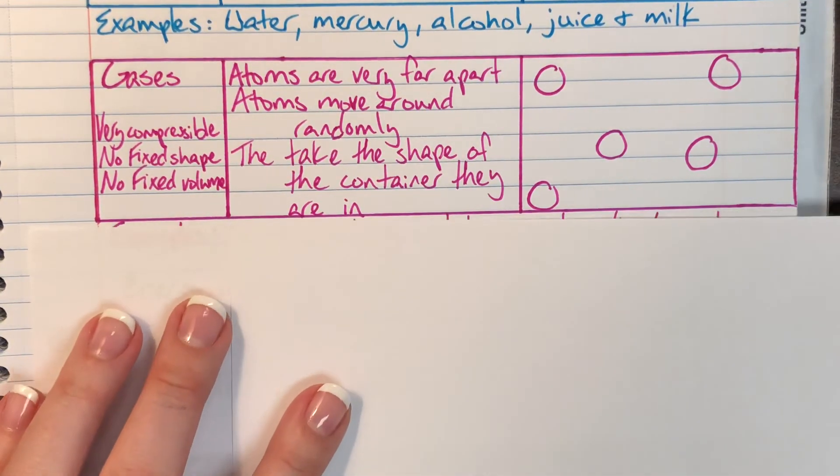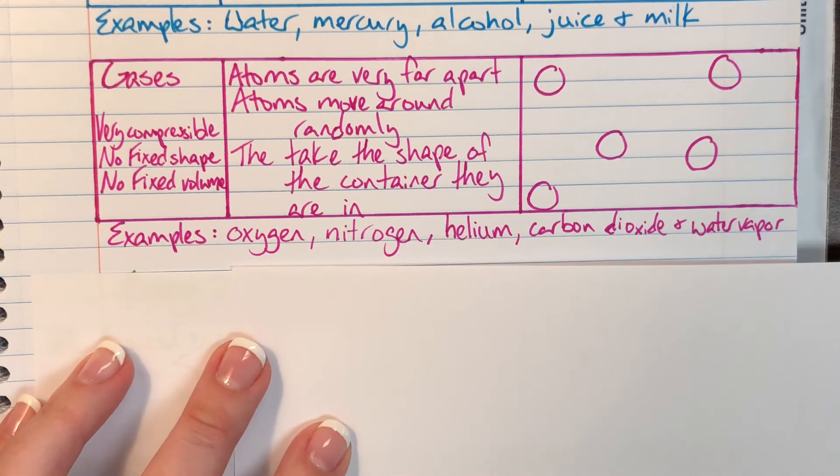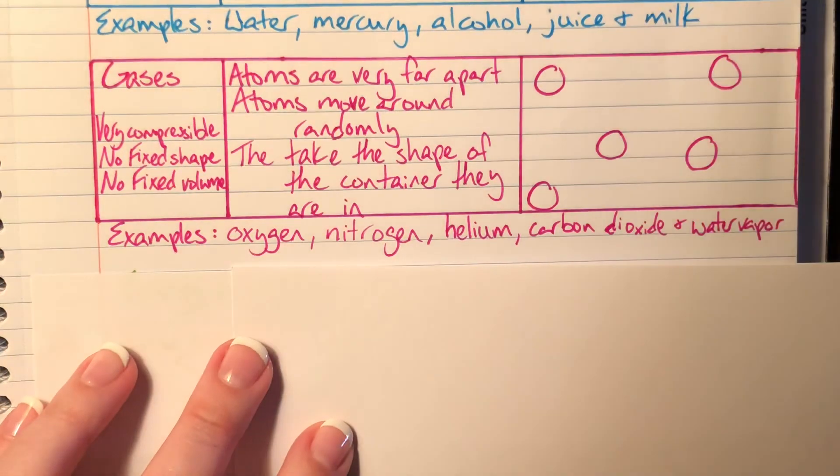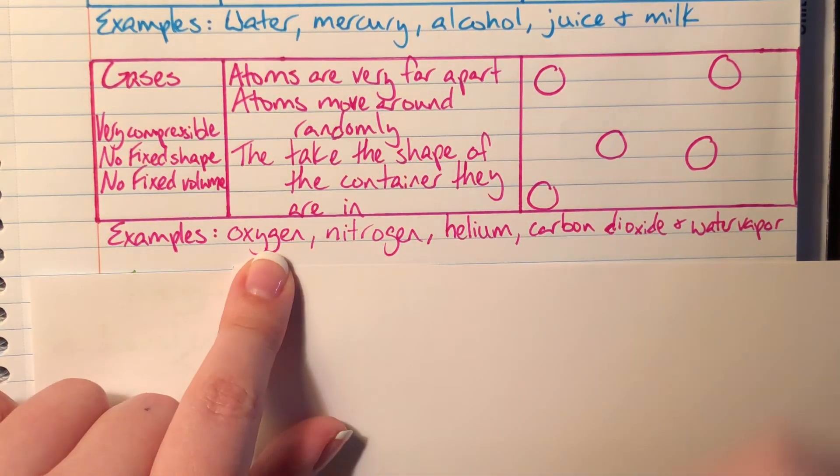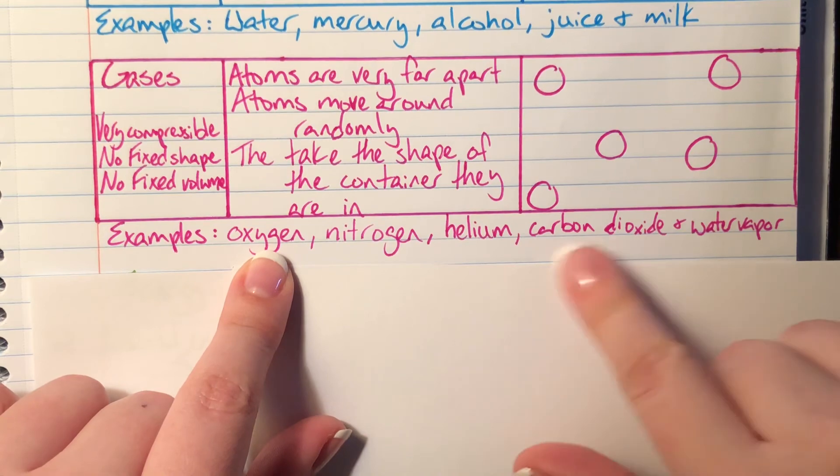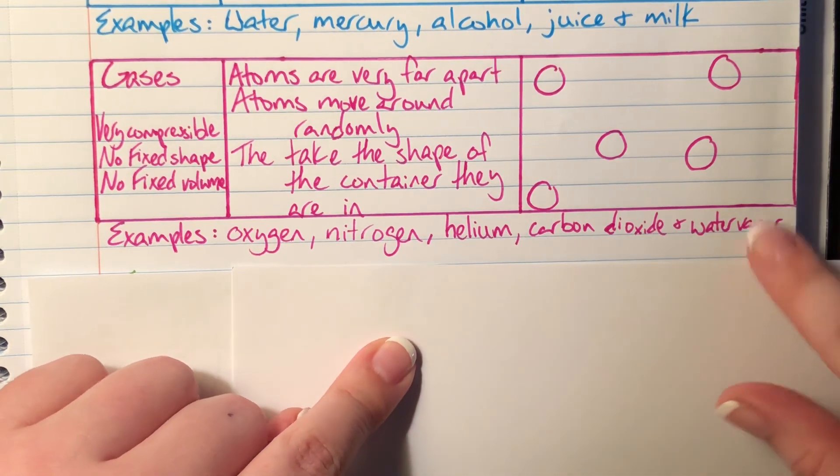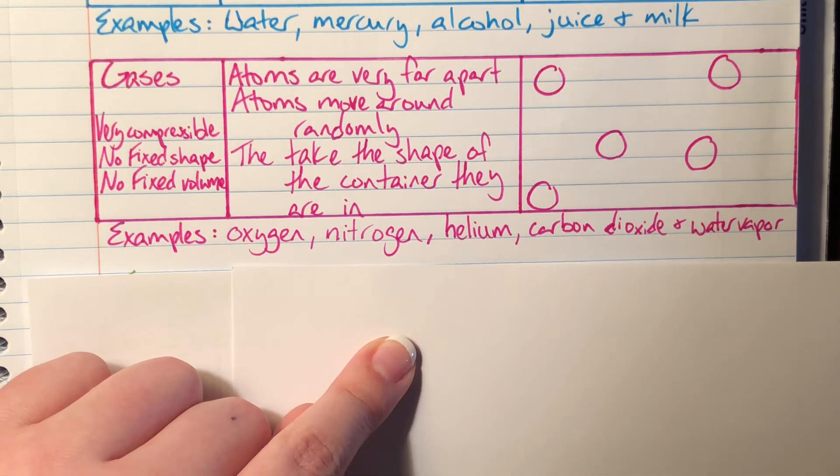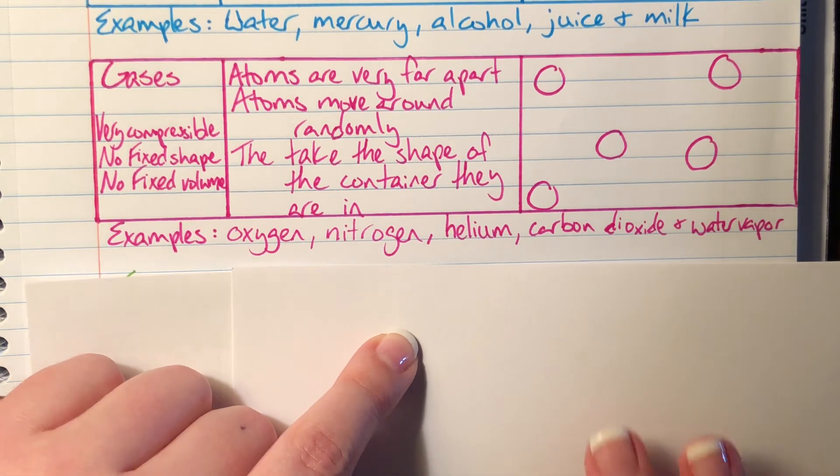Some examples of gases are oxygen, nitrogen, helium, carbon dioxide, and water vapor. Oxygen and nitrogen are the main components of the air that we breathe. We also have carbon dioxide which is what we exhale whenever we breathe. We have helium that fills up our balloons and we have water vapor that's going to be like steam coming off of a boiling pot of water.